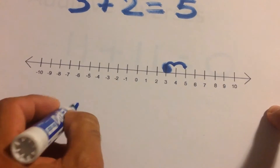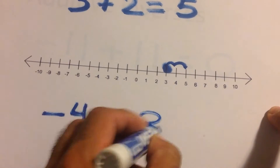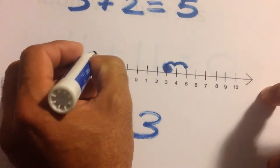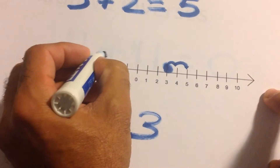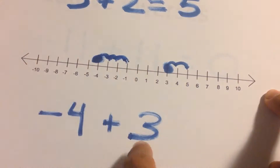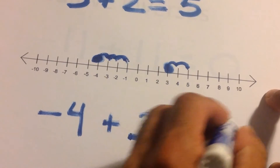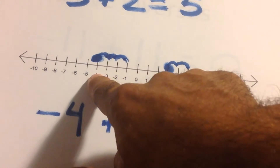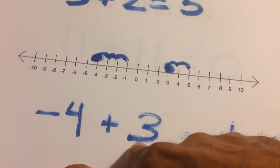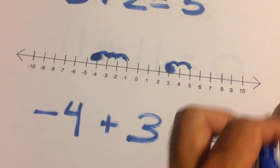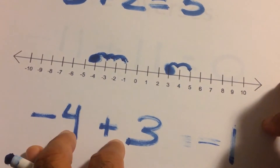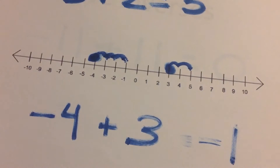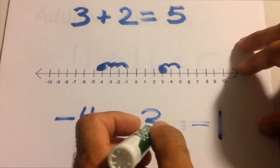If we had negative four plus three, we start at negative four on the number line. It says plus three, so we add three — move one, two, three to the right — and we get negative one. Just follow the number line: negative four, move three spaces in the positive direction, and you land on negative one.